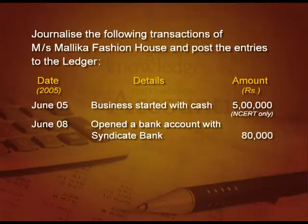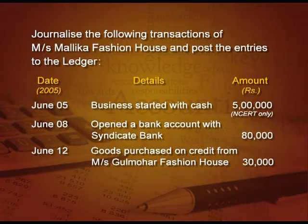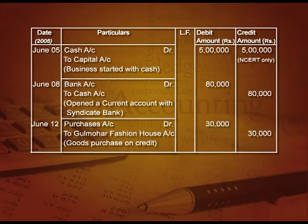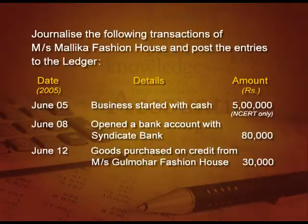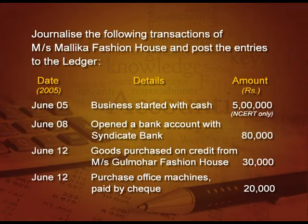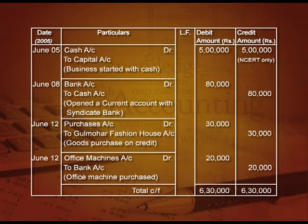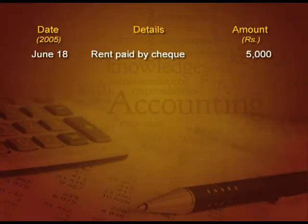Third: goods purchased on credit from Gulmohar ₹30,000 — purchase account debit to Gulmohar ₹30,000. In the purchase account, we write 'To Gulmohar ₹30,000', and in the Gulmohar account 'By Purchase ₹30,000'. Fourth: purchased office machine by cheque ₹20,000 — office machine account debit ₹20,000 to bank account ₹20,000. In the office machine account, we write 'To Bank ₹20,000', and in the bank account 'By Office Machine'.